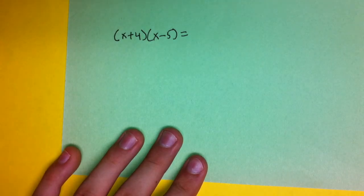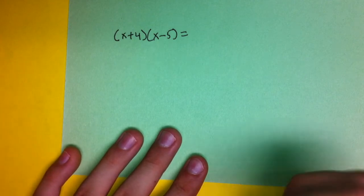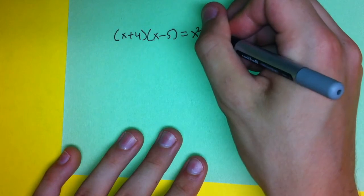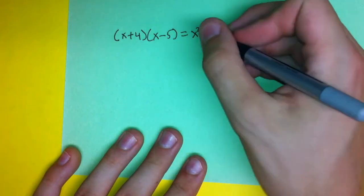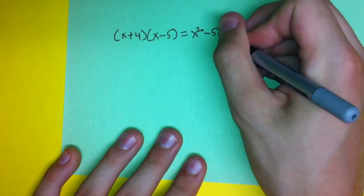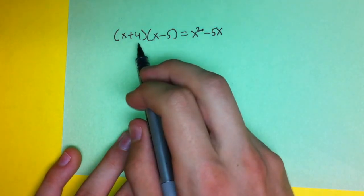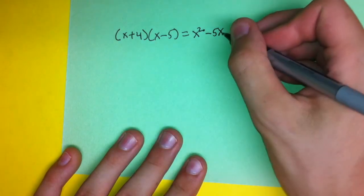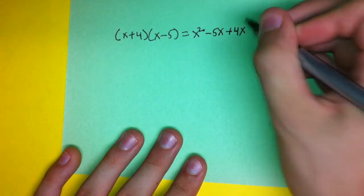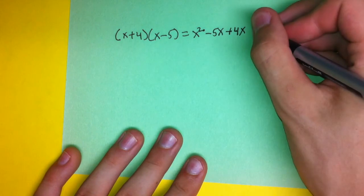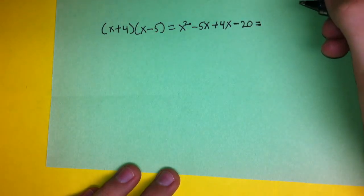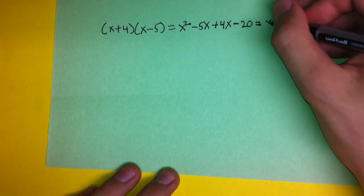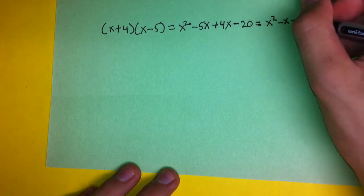The second example problem was (x + 4)(x - 5). Multiplying the first two terms in each expression gives x squared. Then multiplying the first term times the last term in the second expression gives minus 5x. Moving on to the second term in the first expression, we have 4x, and then 4 times negative 5 is minus 20. That simplifies to x squared minus x minus 20.